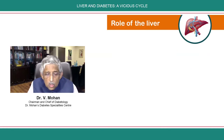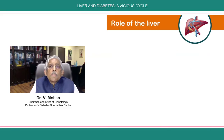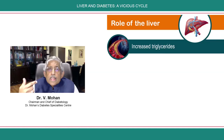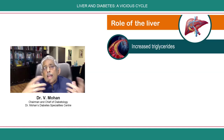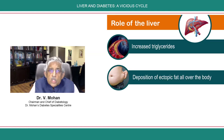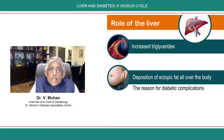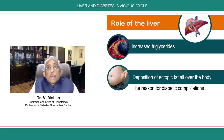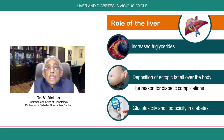The liver itself can lead to increased triglycerides, and these increased triglycerides can then be deposited all over the body as ectopic fat, which is one of the reasons why diabetic complications set in. We know that in uncontrolled diabetes, you have both glucotoxicity and lipotoxicity.